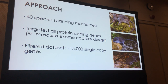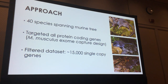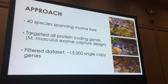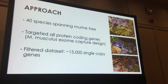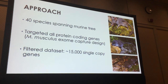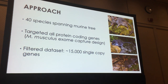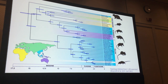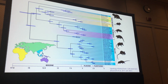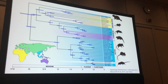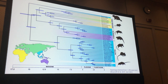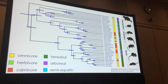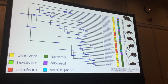The approach we took was to sequence 40 species covering the diversity of murine rodents. For those 40 species we targeted and sequenced whole exomes — all the protein-coding genes — using a Mus musculus whole-exome capture design. Our filtered dataset was around 15,000 single-copy genes across these 40 species. This phylogeny shows the diversity of the 40 species sequenced, with representatives from the three major clades of murine rodents: the Rattini, the Hydromyini, and the Mus-related clade.